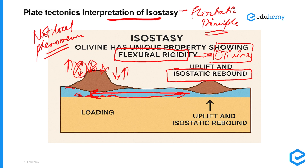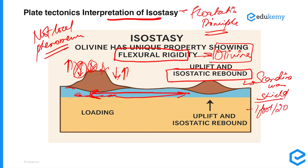There are multiple examples of isostatic imbalances and rebound. There has been a slow and gradual upliftment of the Scandinavian shield, rising at the rate of one foot every 20 years. Similar observations have been seen in Alaska, where upliftment is occurring due to melting ice associated with global warming. Other effects of isostatic imbalance include earthquakes, land upliftment, and land subsidence.